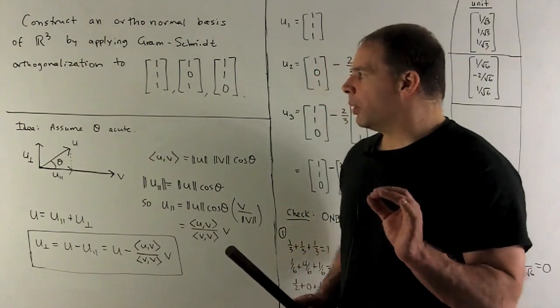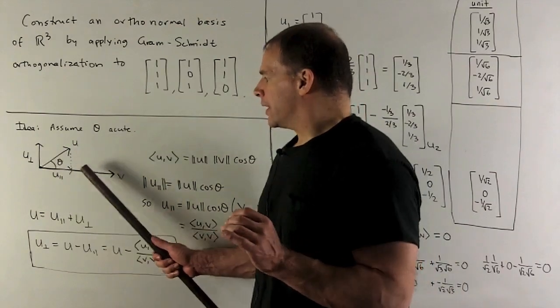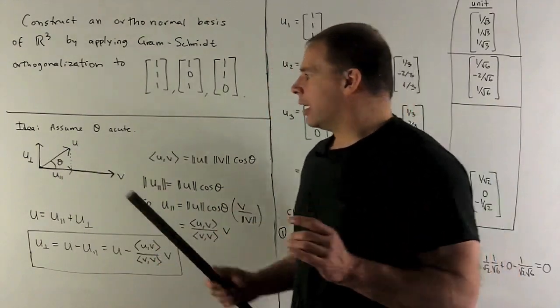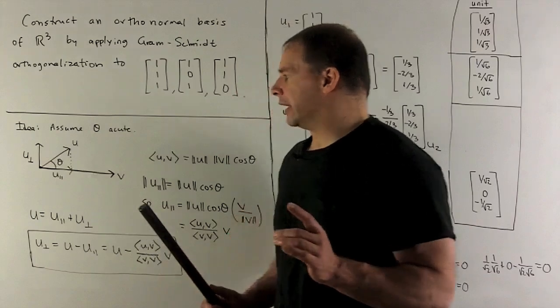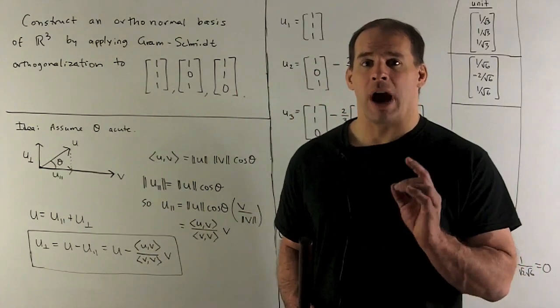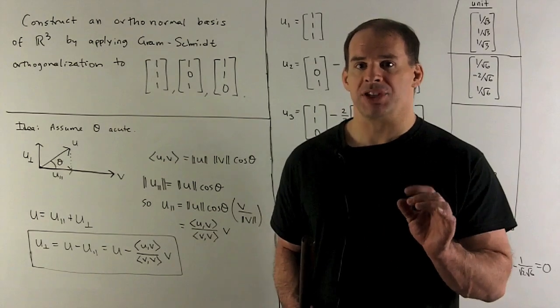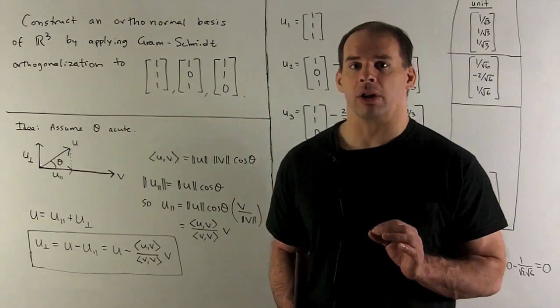Now, I can decompose our vector u into a part that's parallel to v and a part that's perpendicular to v. You'll note u is equal to u_perp plus u_parallel. So if I want the part that's perpendicular to v, I just take u and subtract off the parallel part.